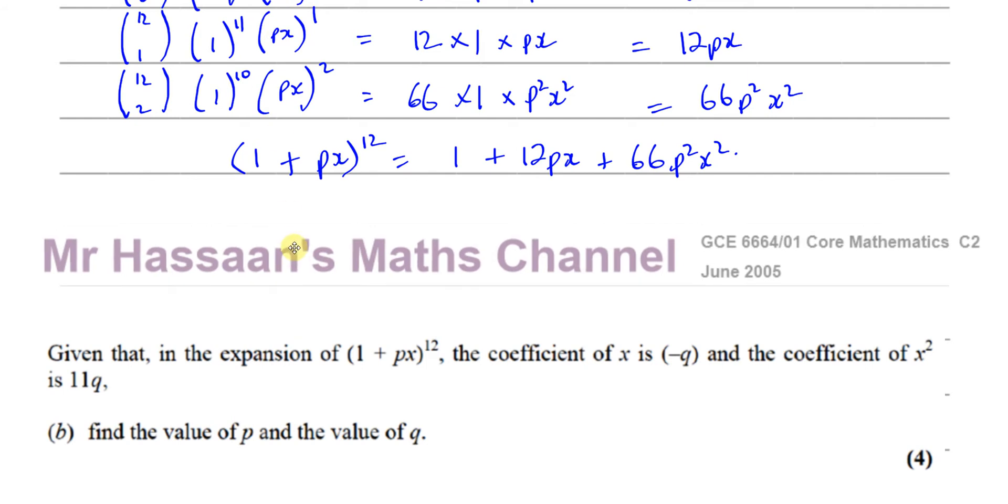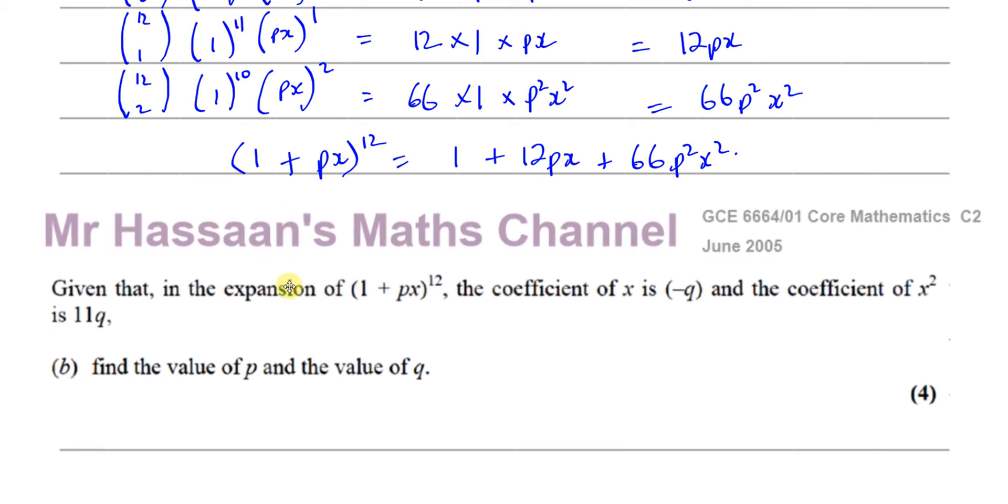And we're told, given that the expansion of 1 plus Px to the power of 12, which is what we expanded there, in the expansion, the coefficient of X is minus Q, and the coefficient of X squared is 11Q.